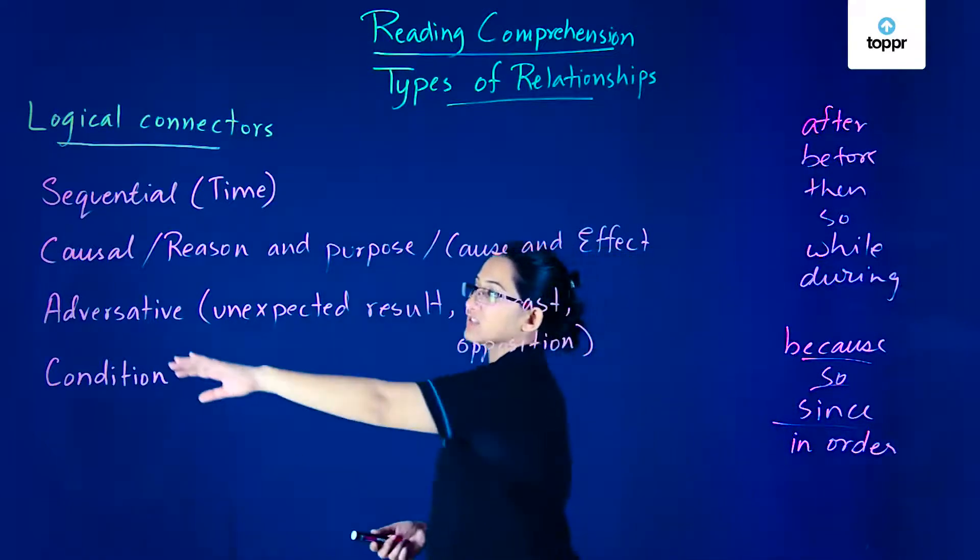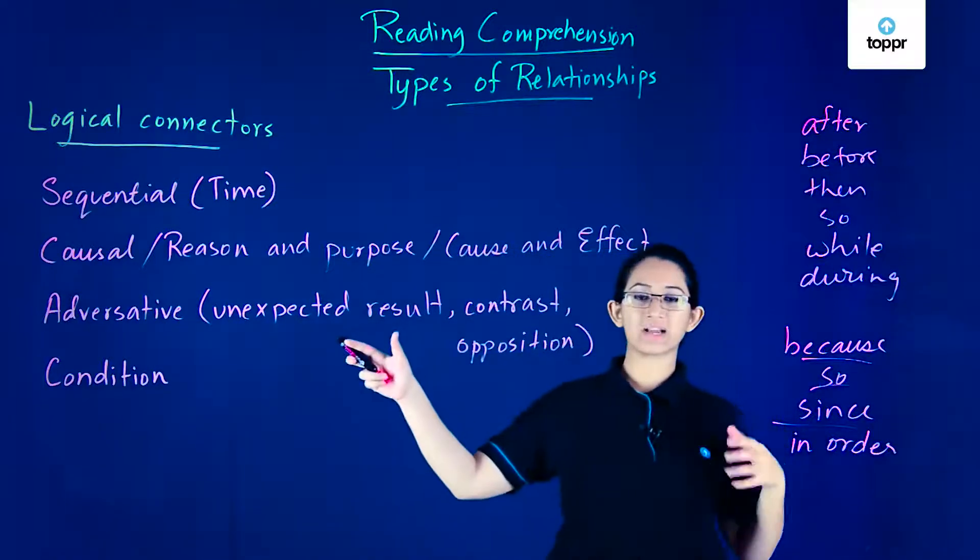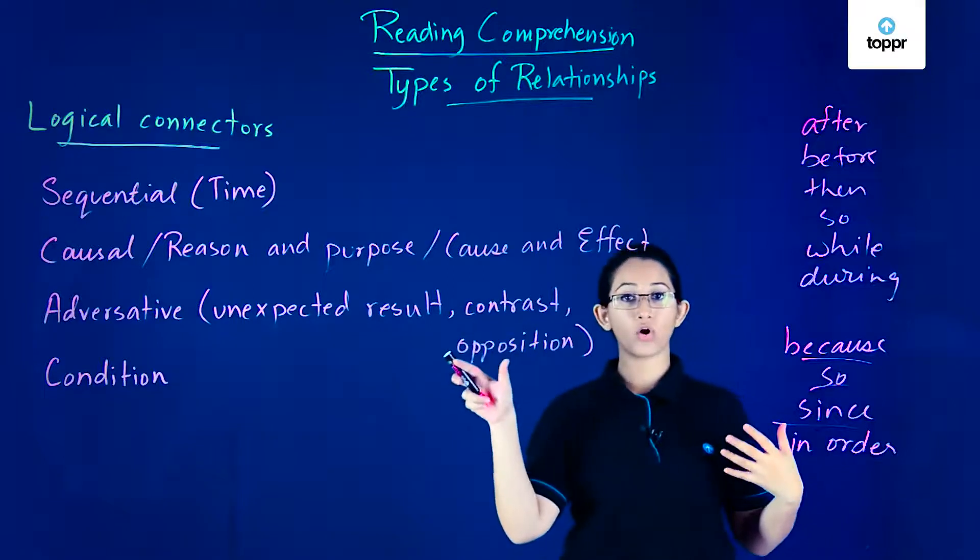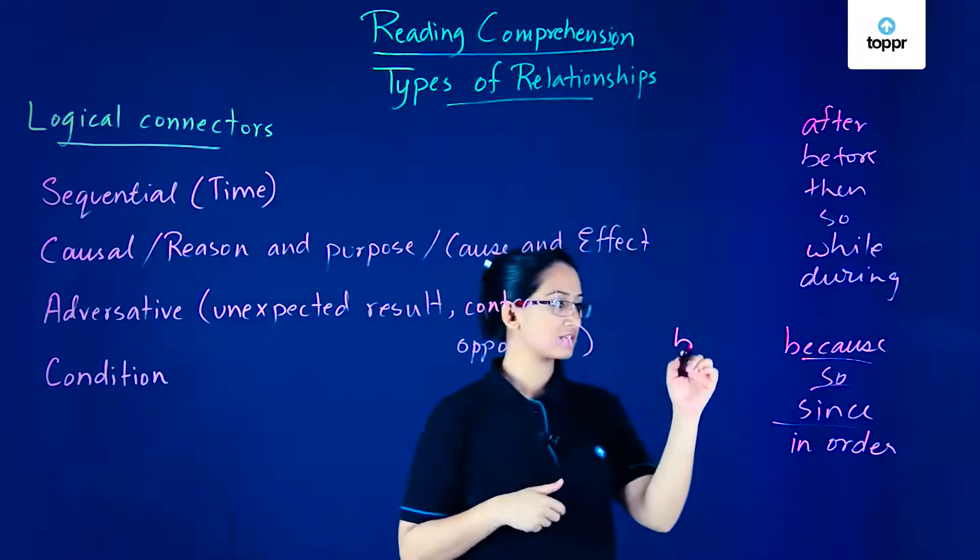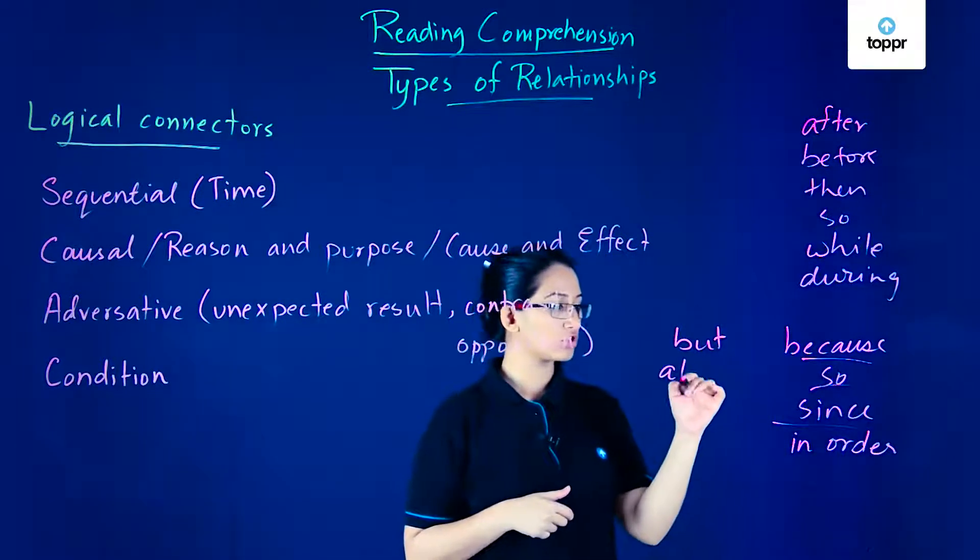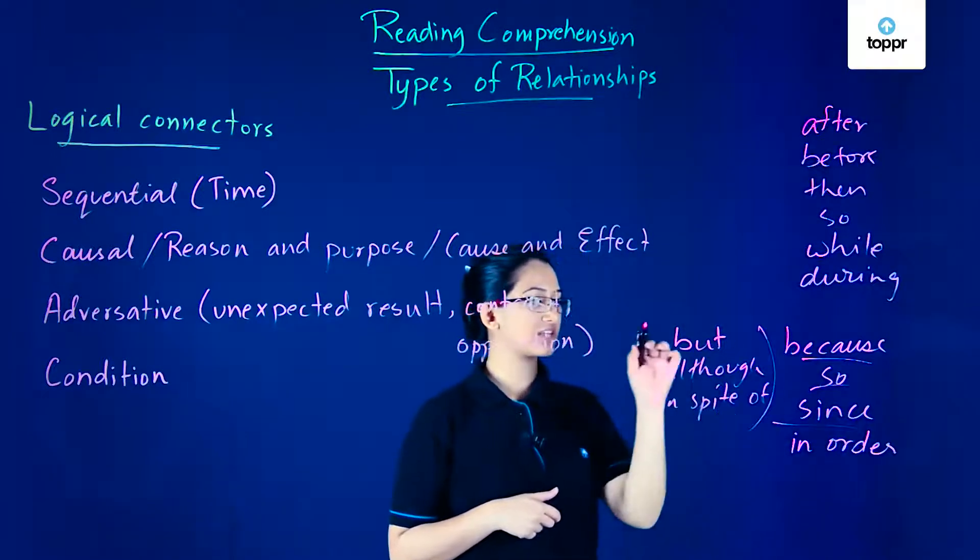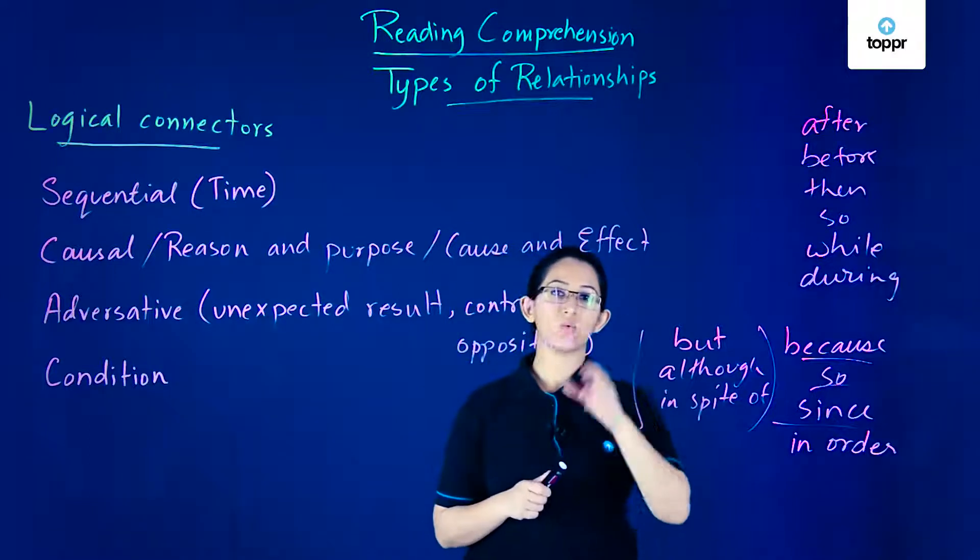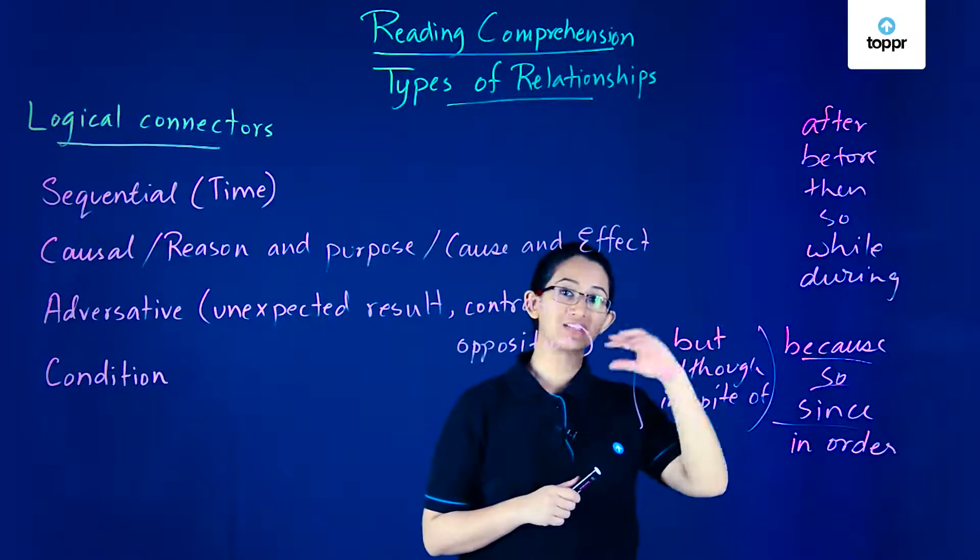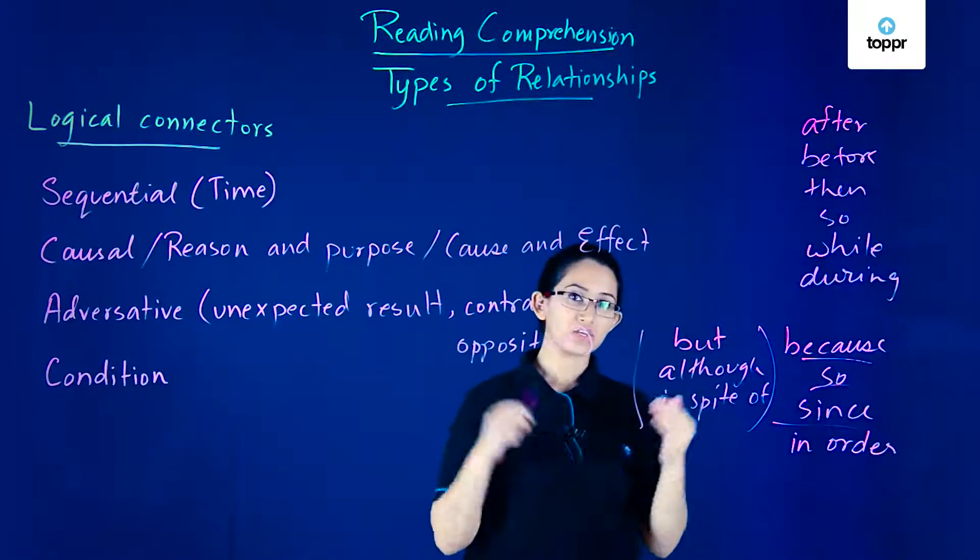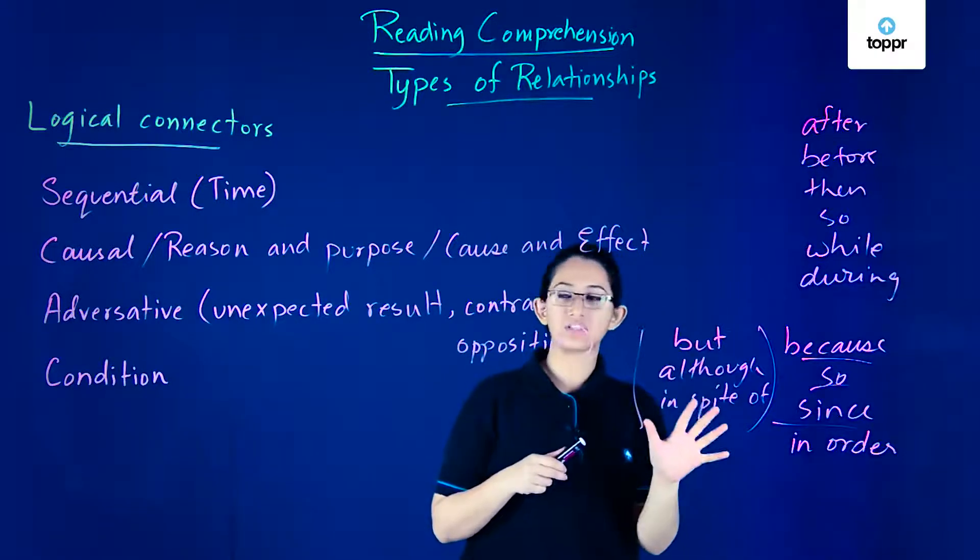Next you have the adversative type of logical connector. These show you that there is an unexpected result or contrast or opposition. They express something that's clashing. Examples could be but, although, or in spite of. All of these words or phrases will tell you that one idea is in contrast or opposite to another idea or it's an unexpected result of something else. That clashing of ideas can be identified by looking out for these words.